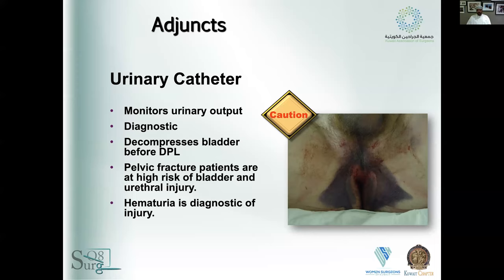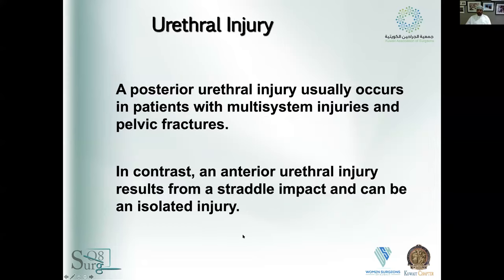Another adjunct is the urinary catheter — not just for urinary retention. The idea is to monitor urine output as a gauge for resuscitation efficiency. It is also diagnostic and decompresses the bladder before DPL. Always be careful with pelvic fracture patients — they're at high risk for bladder and urethral injuries. A hematoma can be diagnostic of that. Posterior urethral injuries usually happen with polytrauma and pelvic injuries, while anterior urethral injuries tend to result from direct injury, like a straddle impact.